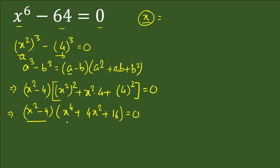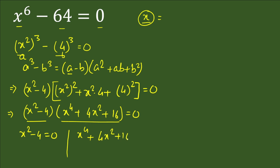Since the product of two factors equals 0, we can write: either x² minus 4 equals 0, or x⁴ plus 4x² plus 16 equals 0.